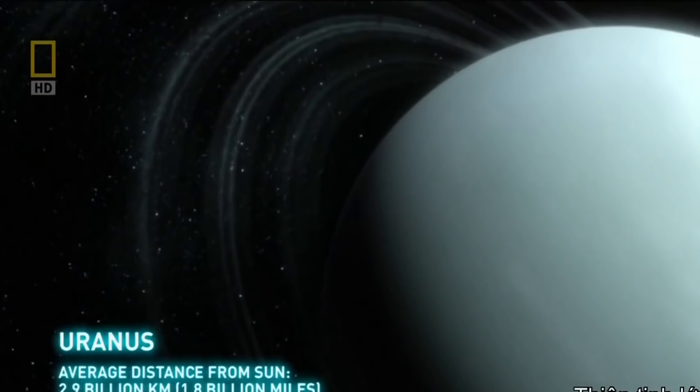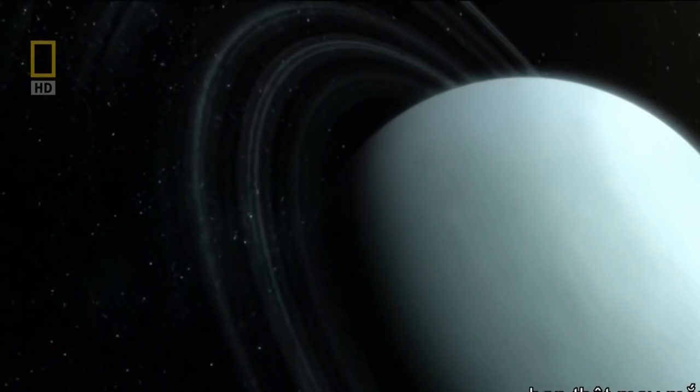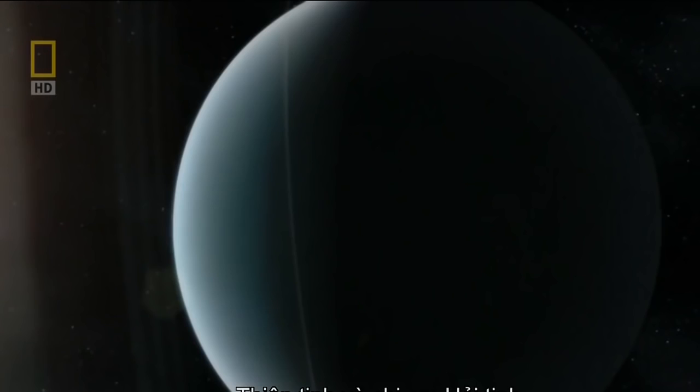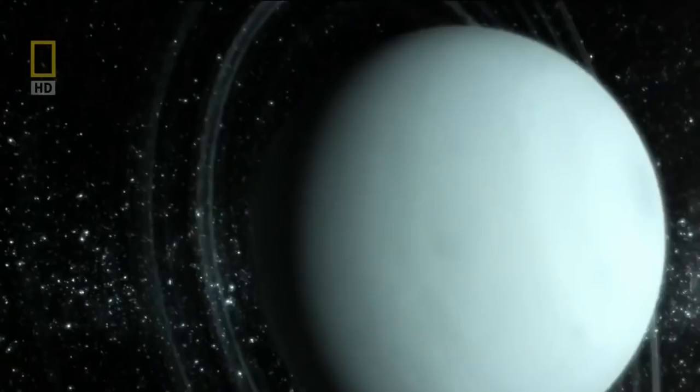63 times larger than the Earth. Here, you'd be lucky to celebrate a single birthday. The planet takes 84 years to make its way around the Sun. Uranus and sister Neptune are known as the ice giants because of their frigid outer atmospheres, supercooled to minus 355 degrees Fahrenheit.